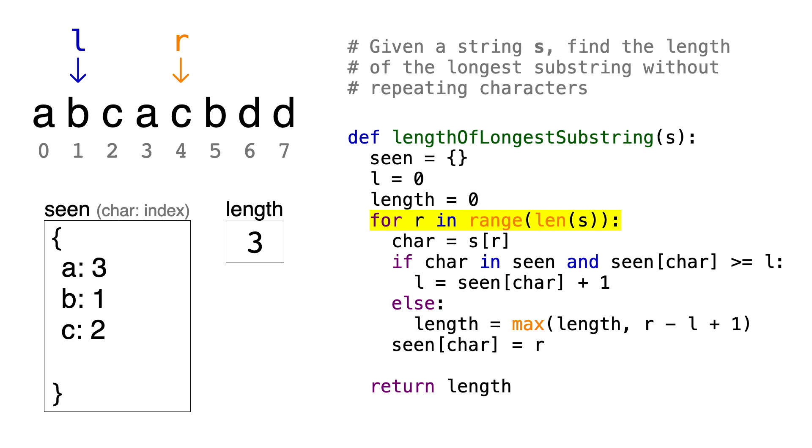The next iteration is similar. Char is C, which we have seen before, and its last known index is 2, which is greater than the left index, which is 1. So we'll update the left pointer to be 2 plus 1, which is 3. So now C is no longer repeated, and we'll update its index to be 4.